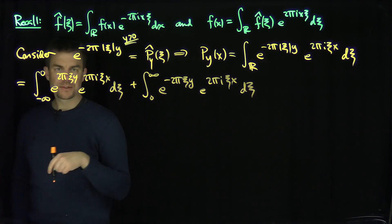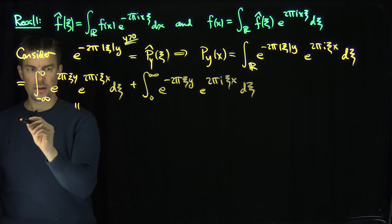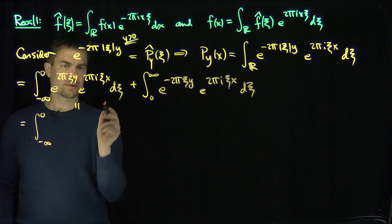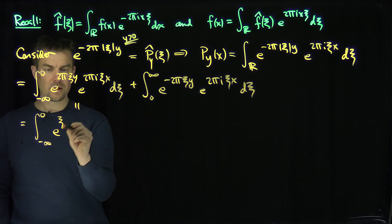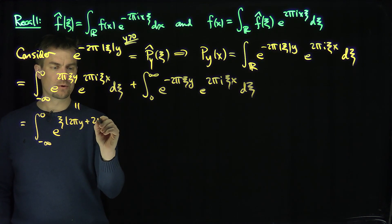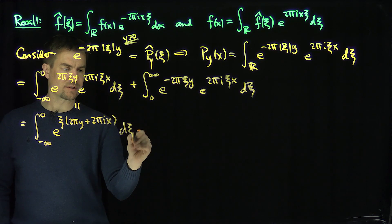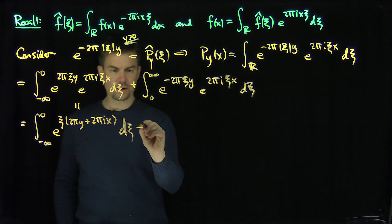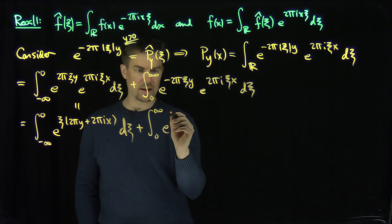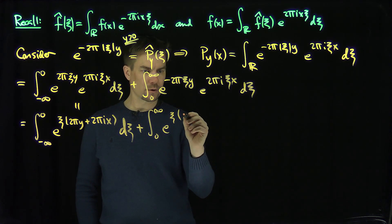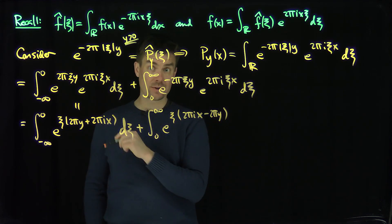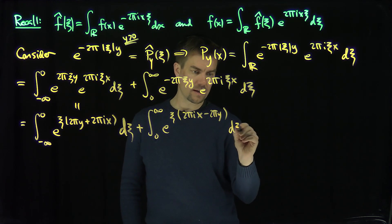Now there are common terms we can group. This becomes the integral from negative infinity to zero of e^{ξ(2πy + 2πix)} dξ, plus the integral from zero to infinity of e^{ξ(2πix - 2πy)} dξ, bearing in mind again that y is greater than zero in the upper half space.